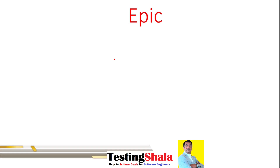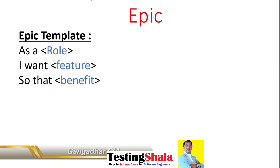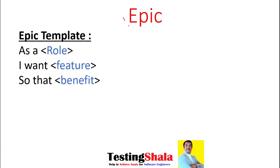First we will try to understand what an epic is and how it is really represented. The epic template would be written as: 'As a role, I want to access a certain feature so that I will get a certain benefit.' This is how the epic will normally be written for any project.